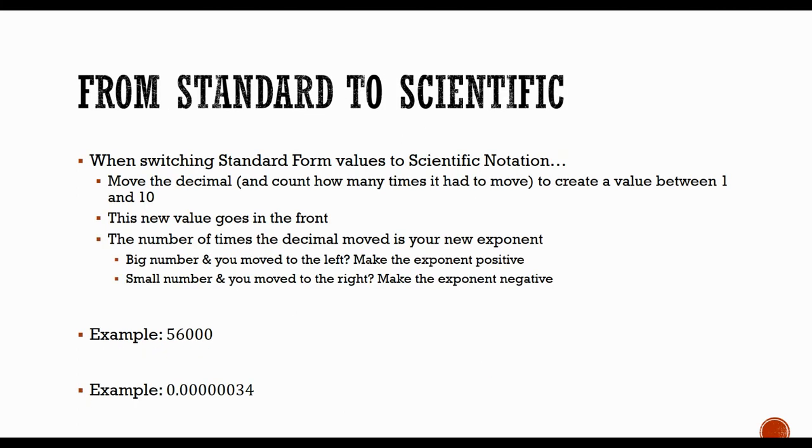So switching from standard to scientific. If you have a normal number, we want to switch it into scientific. We want to start by moving your decimal and counting how many times we had to move it. How many times we had to move is going to be your exponent. And we're trying to create a number between 1 and 10. That new value will go in the front.